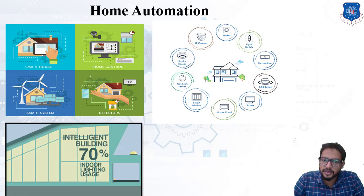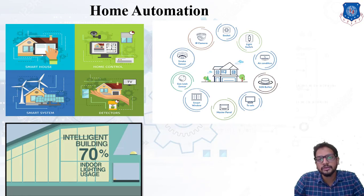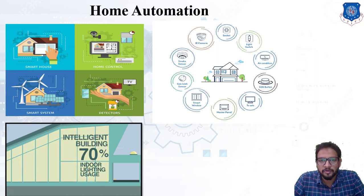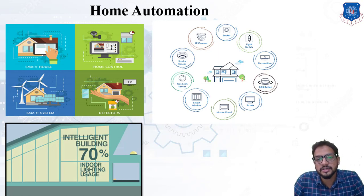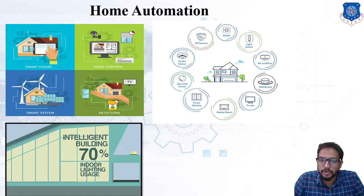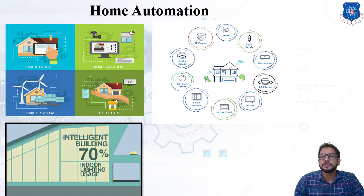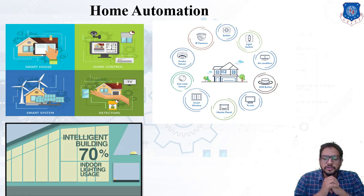All these devices can be converted into smart devices by providing them an internet connection, and can be easily accessible from any remote location. We can even control the lighting using a smart lighting system, and we can apply this in home security as well. Applications include an IR camera, smoke sensor attached to the ceiling to detect smoke, gas leak sensors, smart windows, master panel, smart television, emergency buttons, air conditioners, and light switches.